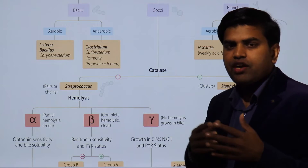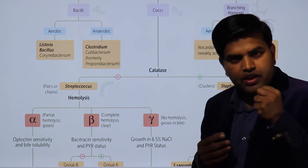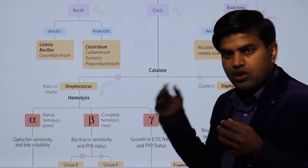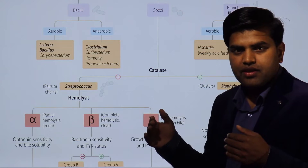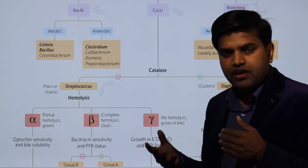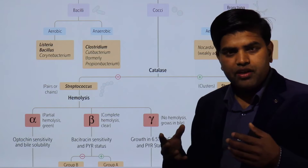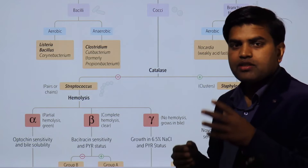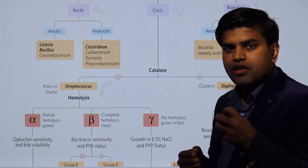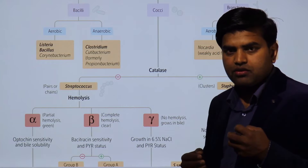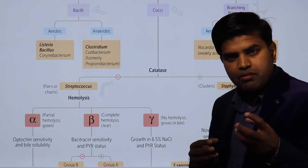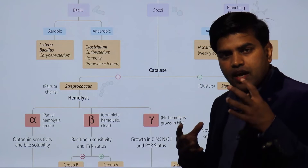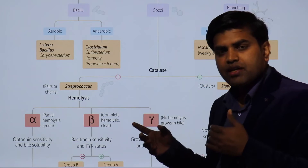In the third step we decolorize: bacteria that retain the crystal violet color are known as gram positive, while those that lose it become colorless. In the final counterstain step, we apply safranin, which makes the colorless bacteria turn pink. So at the end of the procedure, gram positive bacteria are purple or blue, and gram negative bacteria are pink.